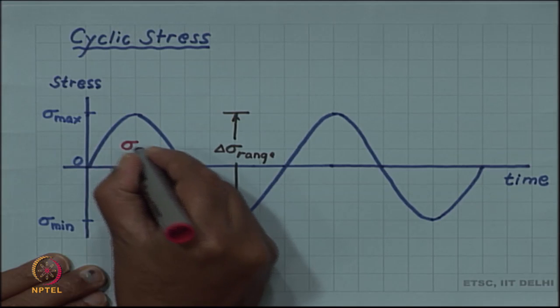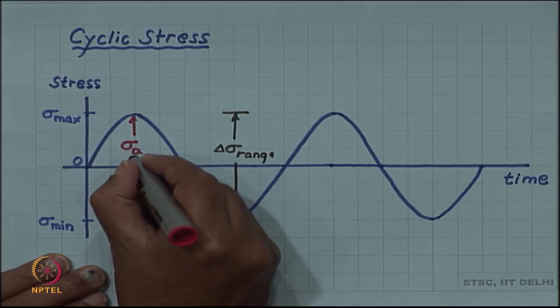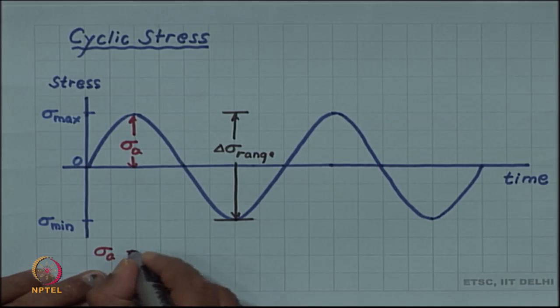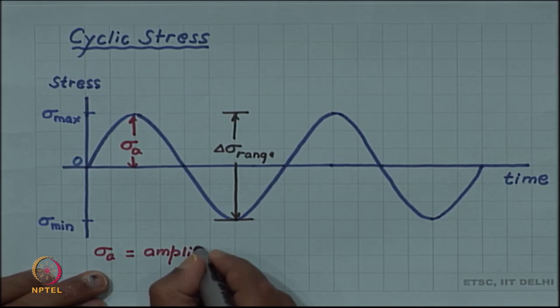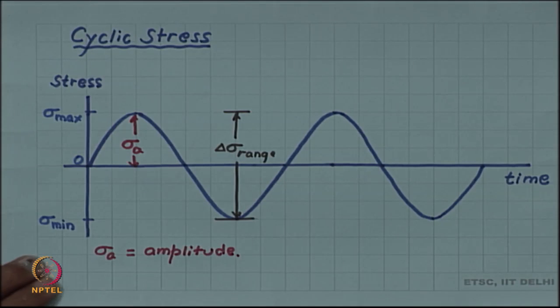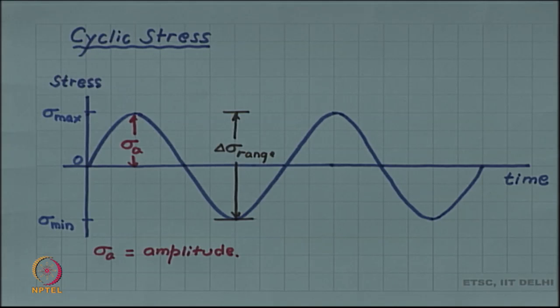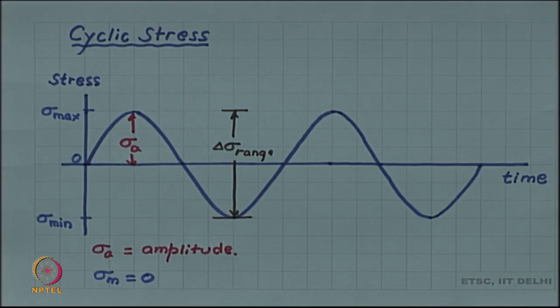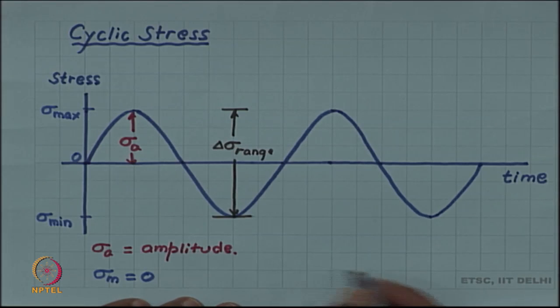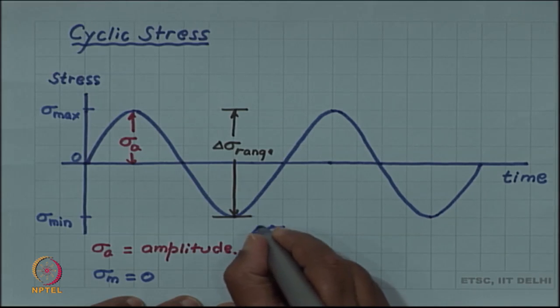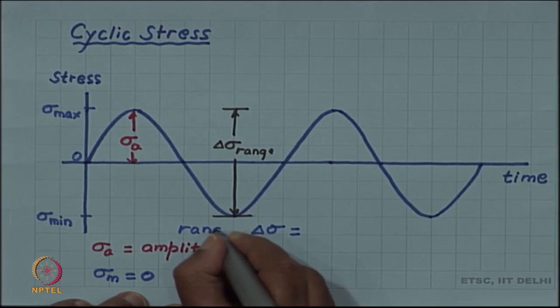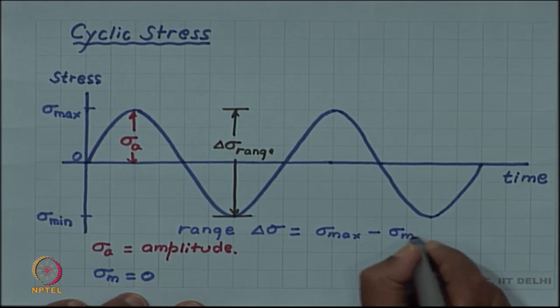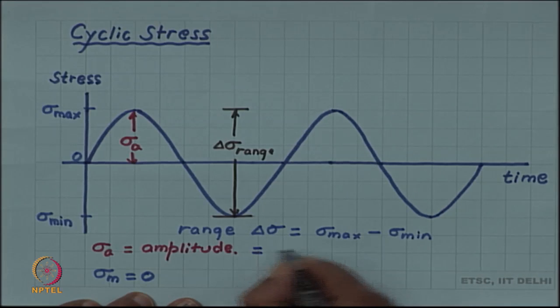This is the amplitude, and we can define sigma range delta sigma as sigma max minus sigma min, and amplitude will be half of the range.